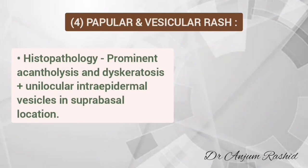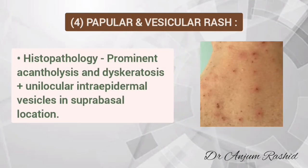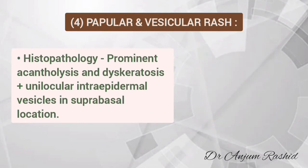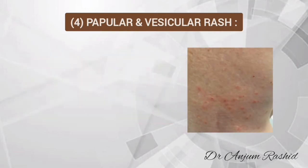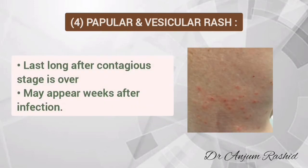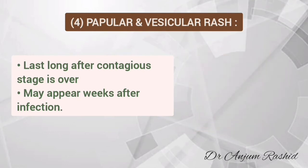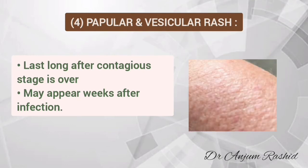Histopathology shows prominent acantholysis and dyskeratosis along with unilocular intraepidermal vesicles in a suprabasal location. In COVID-19 patients these rashes can last long after the contagious stage is over, and this rash may also appear many weeks after the onset of infection.